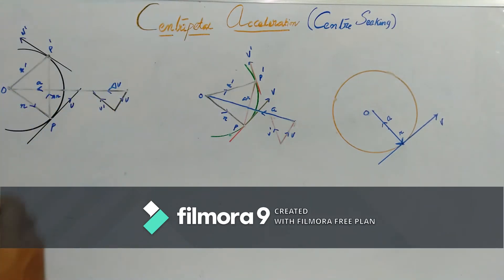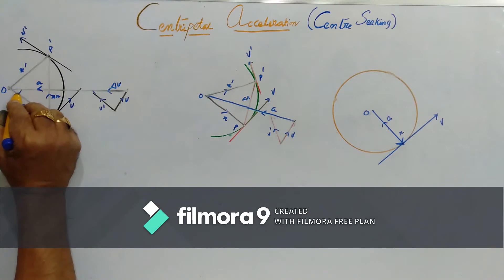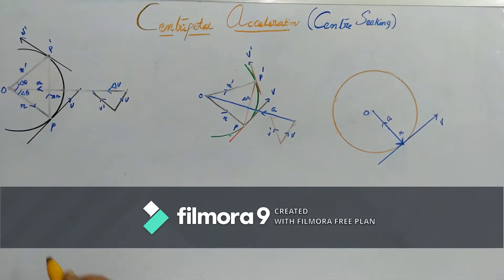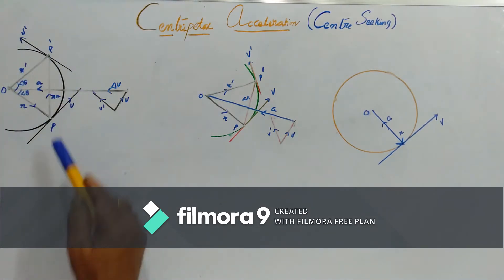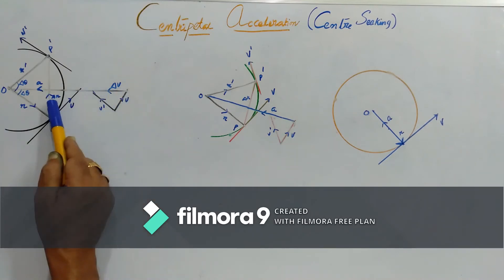And if you place the delta V vector in such a way that it bisects this angle then it will be passing through the center. How? Because R is perpendicular to P and R' is perpendicular to P'. Now, certainly delta V must be perpendicular to delta R.